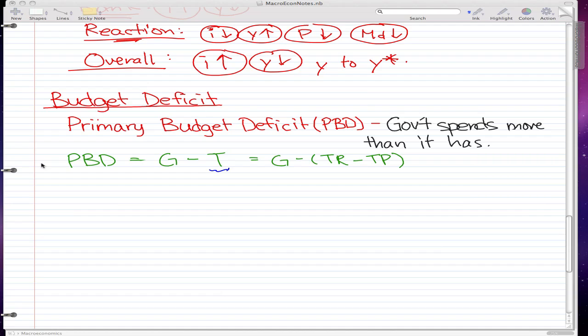We're finally at budget deficit and we're gonna start off with knowing what the primary budget deficit is. It's pretty much when the government spends more than it has and this is the formula for it.